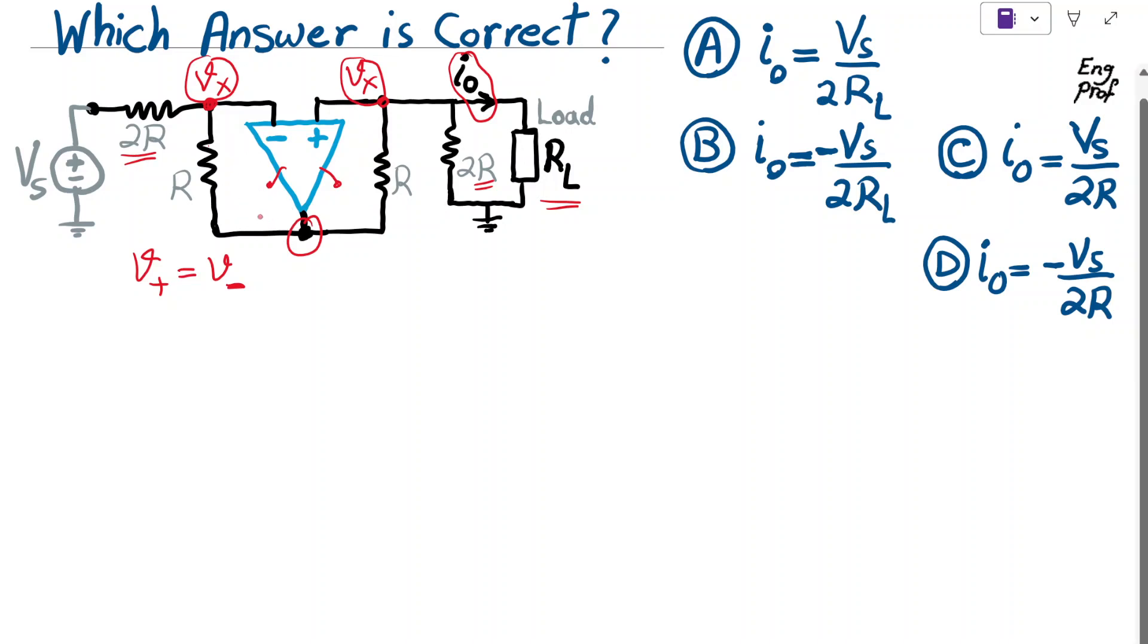So now, let's make the assumption that that current looks like this. So this same current, let's say I, is going this way and also going this way. This current is supplied, of course, by the output of the op-amp. So the current I is flowing both to the left and right, and we want to find it.